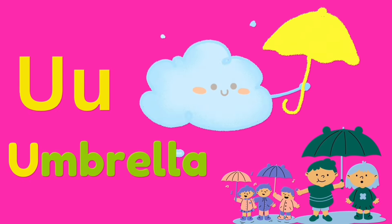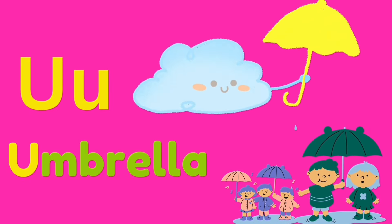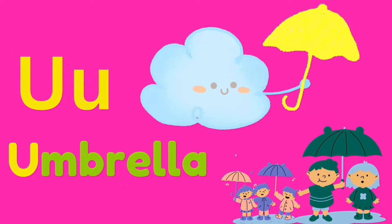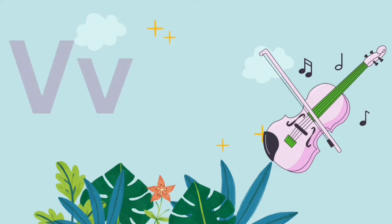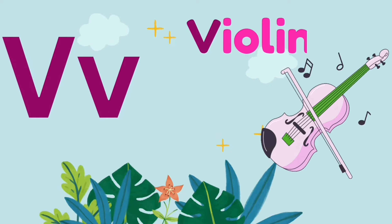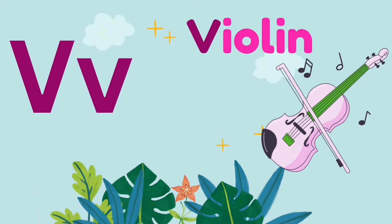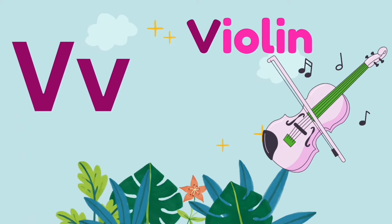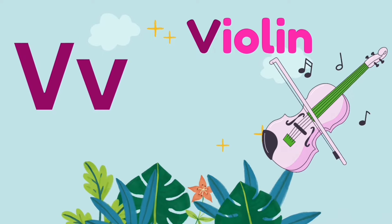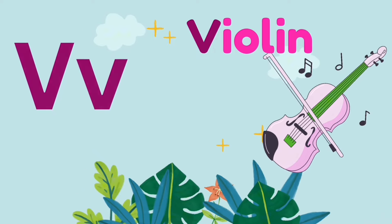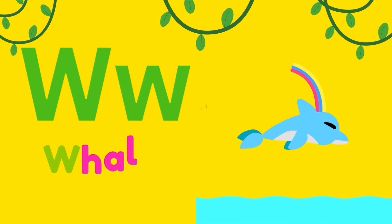U is for Umbrella. U, Umbrella. U, Umbrella. V is for Violent. V, Violent. V, Violent.